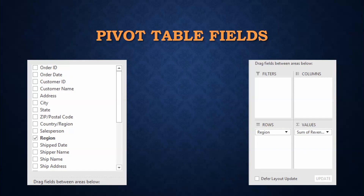If I want more detail — not just by region but by quarter — if I have quarter as one of my column headers, I can choose that for the column area to see Q1, Q2, Q3, Q4. Then if I only want to do this for a specific year, that's where I can add a filter: I'm only doing it for the year 2023. Boom — it now gives me all sales by region for each quarter for 2023.